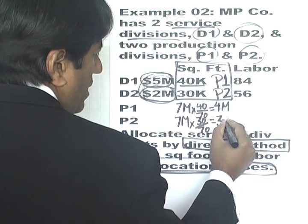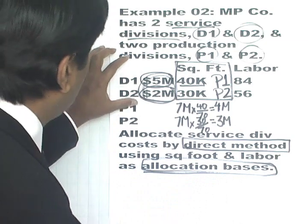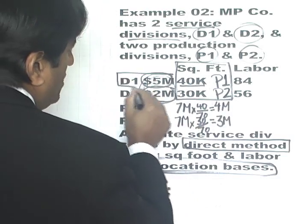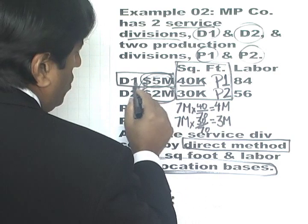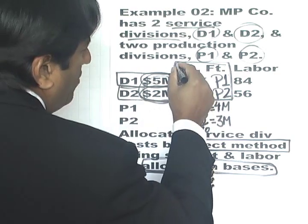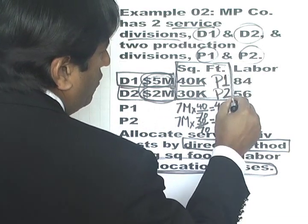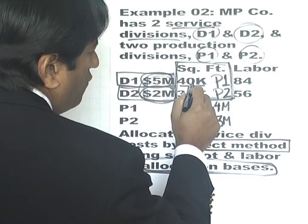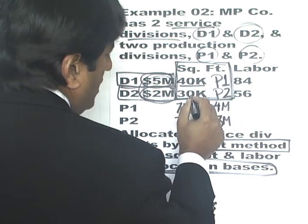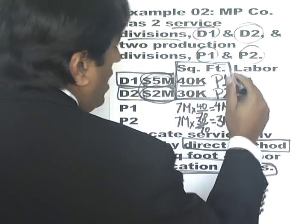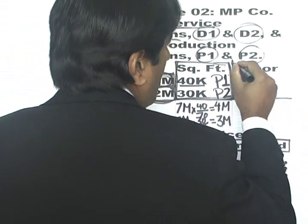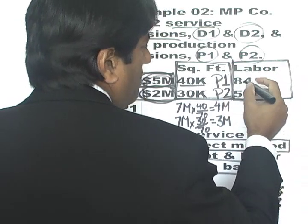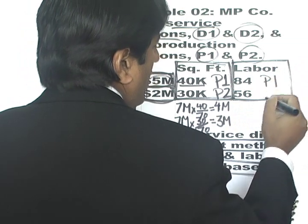Similarly, P2 will get the total cost of $7 million multiplied by the proportion of office space P2 uses, which is 30/70, equal to $3 million. D1 has a cost of $5 million and D2 has a cost of $2 million, combining to the $7 million total. The standalone table shows P1 has 40,000 square feet and P2 has 30,000 square feet.